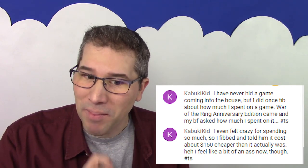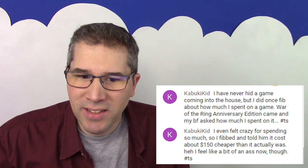All right, let's continue on to the next comment. Kabuki says: I have never hid a game coming into the house, but I did once fib about how much I spent on a game. War of the Ring Anniversary Edition came and my boyfriend asked how much I spent on it. I even felt crazy for spending so much. So I fibbed and told him it cost $150 cheaper than it actually was. I can see that. I can totally see that. That's one of the reasons why when I'm shopping around for a game, even if it's not the location that I end up purchasing it from, if I find it really cheap online and I want to show someone, hey, I want to get this game, I'll usually show them the copy of the webpage that has it the cheapest price that I have found.